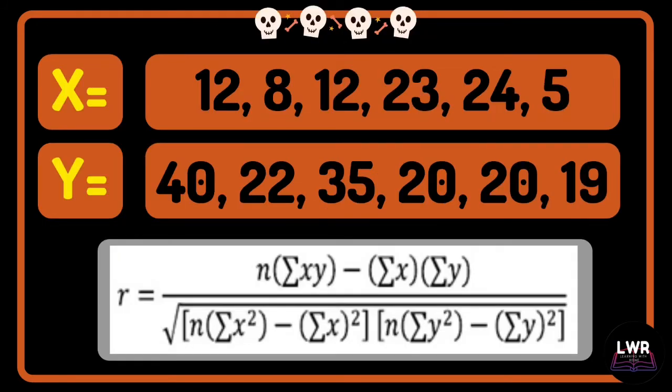The x variables are 12, 8, 12, 23, 24, and 5, while the y variables are 40, 22, 35, 20, 20, and 19.